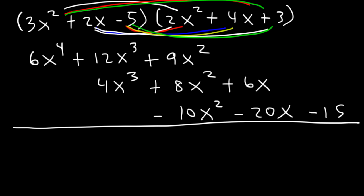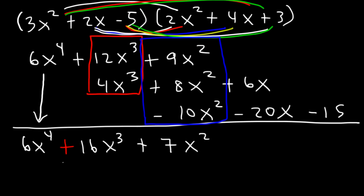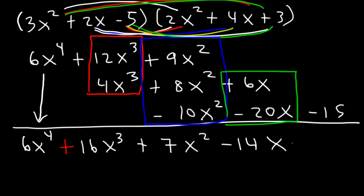Now let's combine like terms. We can bring down the 6x to the fourth, since there's nothing to combine it with. For the x cubed terms, 12 plus 4 is 16 — so this is going to be 16x cubed. For the x squared terms: 9 plus 8 is 17, and 17 minus 10 is 7, so we have positive 7x squared. For the x terms: 6 minus 20 is negative 14, so this is negative 14x. And then we bring down negative 15. So the final answer is 6x to the fourth plus 16x cubed plus 7x squared minus 14x minus 15.